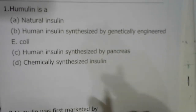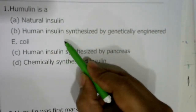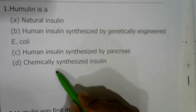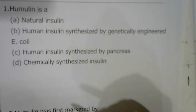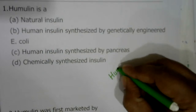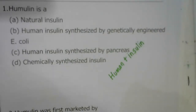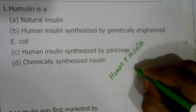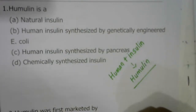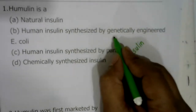The first question: what is Humulin? The options are natural insulin, human insulin synthesized by genetically engineered E. coli, human insulin synthesized by pancreas, or chemically synthesized insulin. The term Humulin is made up of two words: human plus insulin, so combination of human and insulin gives you Humulin.